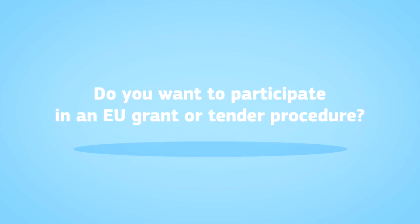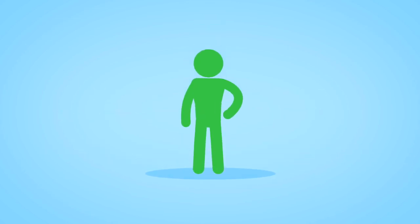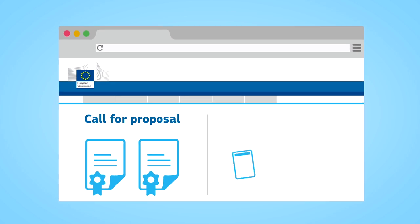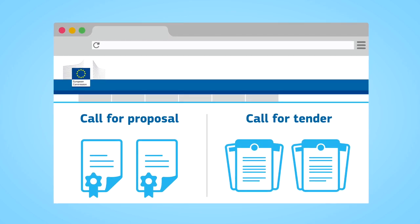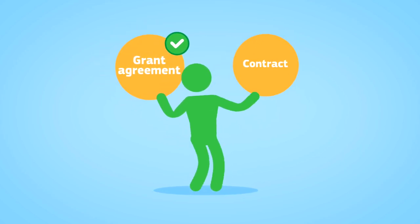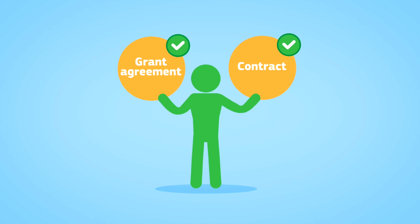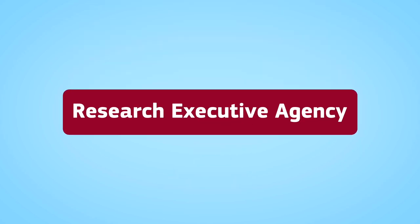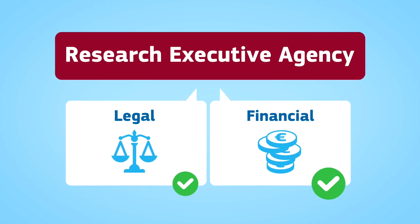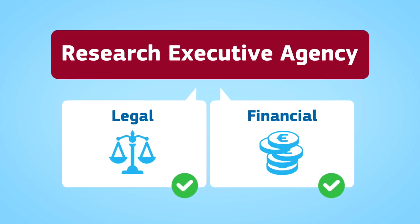Do you want to participate in an EU grant or tender procedure? There is a register where you can encode your organisation's data online before applying to a call for proposal or a call for tender. At a later stage, your organisation will need to be validated before signing a grant agreement or a contract. The Research Executive Agency is now responsible for the legal validation and the financial capacity assessment of your organisation.